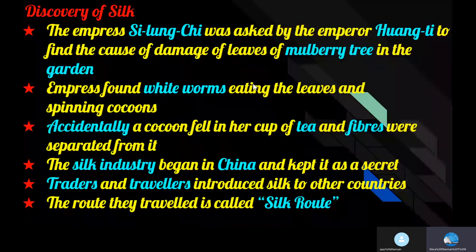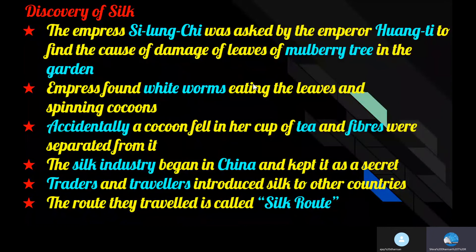Silk was discovered in China. The exact time of discovery of silk is perhaps unknown. According to an old Chinese legend, the empress Si Ling-chi was asked by the emperor Huang-ti to find the cause of the damaged leaves of the mulberry tree in the garden. The empress found white worms eating mulberry trees and noticed they were spinning shiny cocoons around themselves. Accidentally, a cocoon dropped into a cup of tea and a tangle of delicate threads separated out from the cocoon - and so came the discovery of silk.